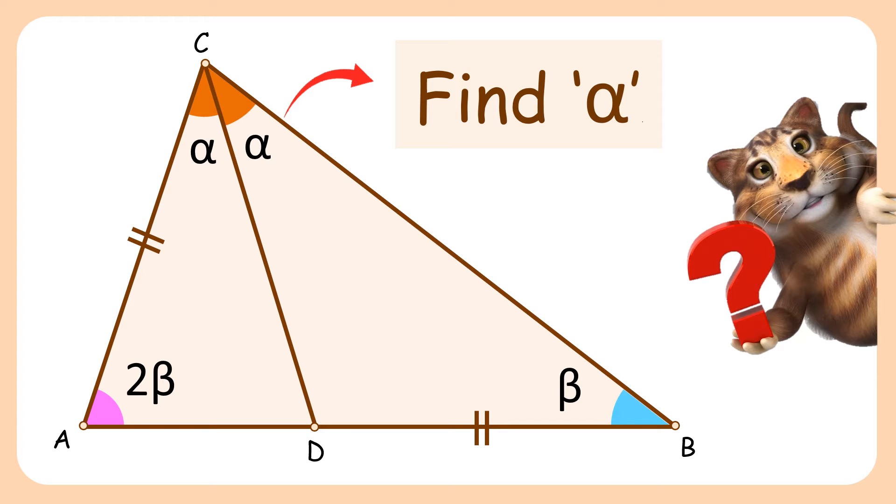In this interesting question, given is triangle ABC where CD is an angular bisector and angle A is twice angle B. Also, the side lengths AC and DB are equal. Using this limited data, we have to find the value of angle alpha.